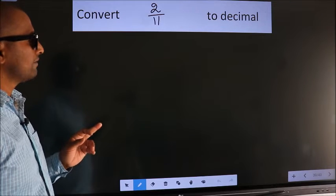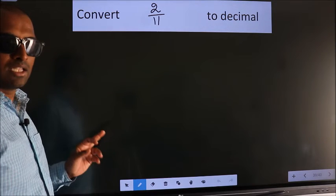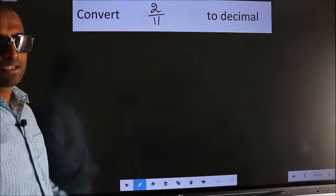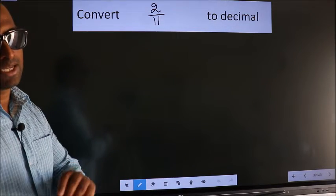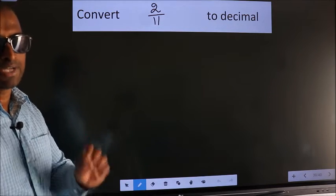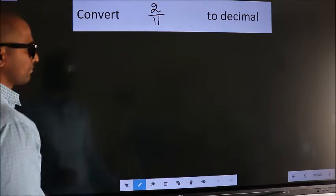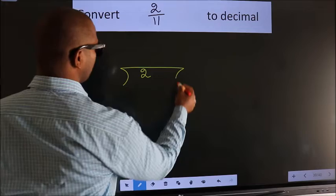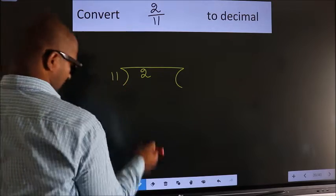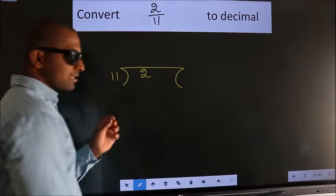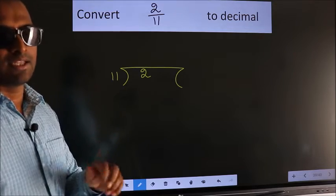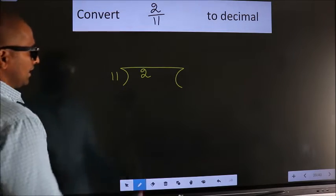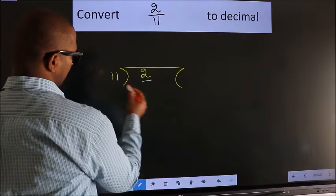Convert 2 by 11 to decimal. To convert this to decimal we have to divide, and to divide we should frame it in this way: 2 here, 11 here. This is your step 1.